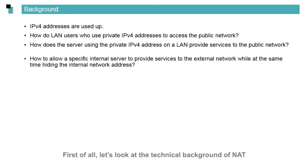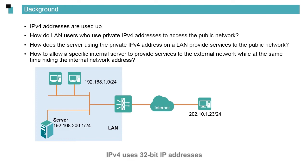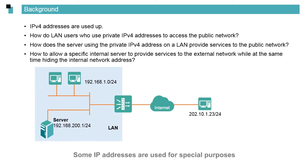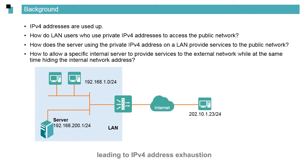Let's look at the technical background of NAT. The current networks are mostly IPv4 networks. IPv4 uses 32-bit IP addresses, and the IPv4 address space is generally exhausted. Some IP addresses are used for special purposes. As the public network grows rapidly, various electronic products are now included in networks, including IoT and smart appliances, leading to IPv4 address exhaustion.